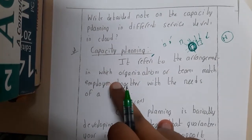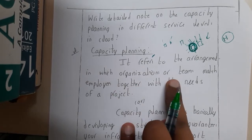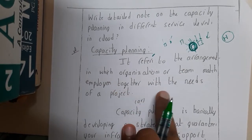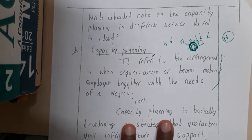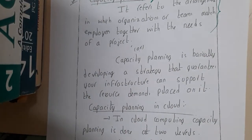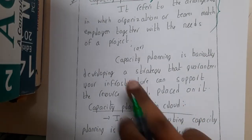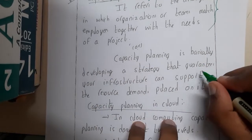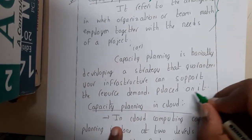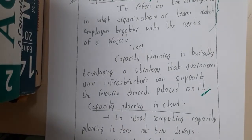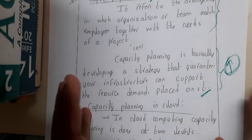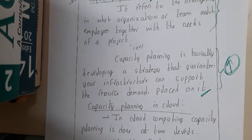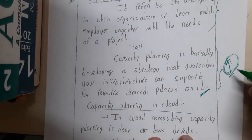Capacity planning refers to the arrangement in which organizations or teams match employees together with the needs of a project. A clearer second definition: capacity planning is basically developing a strategy that guarantees your infrastructure can support resources on demand. So if there is high traffic, your system will not face any issues because you have already planned for those things.